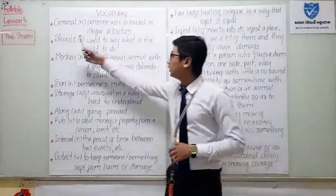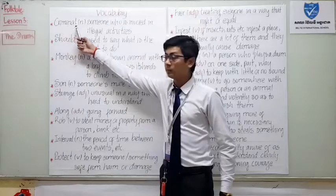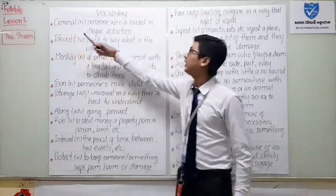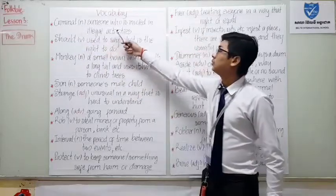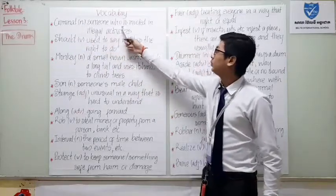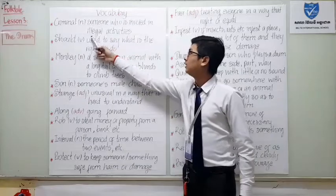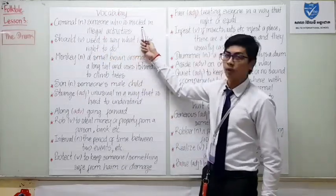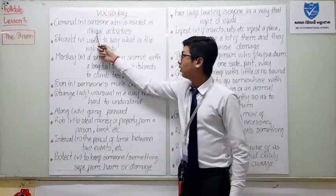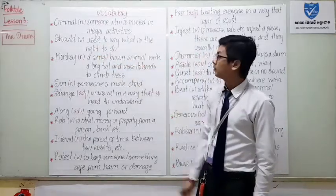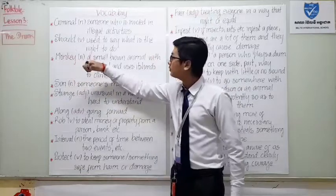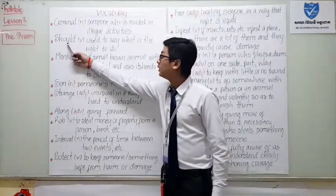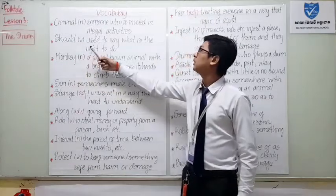All together. The first word is 'criminal.' Criminal. Function: noun. Meaning: someone who is involved in illegal activities. The second word is 'suit.' Suit. Function: verb. Meaning: to use — to say what is the right thing to do.